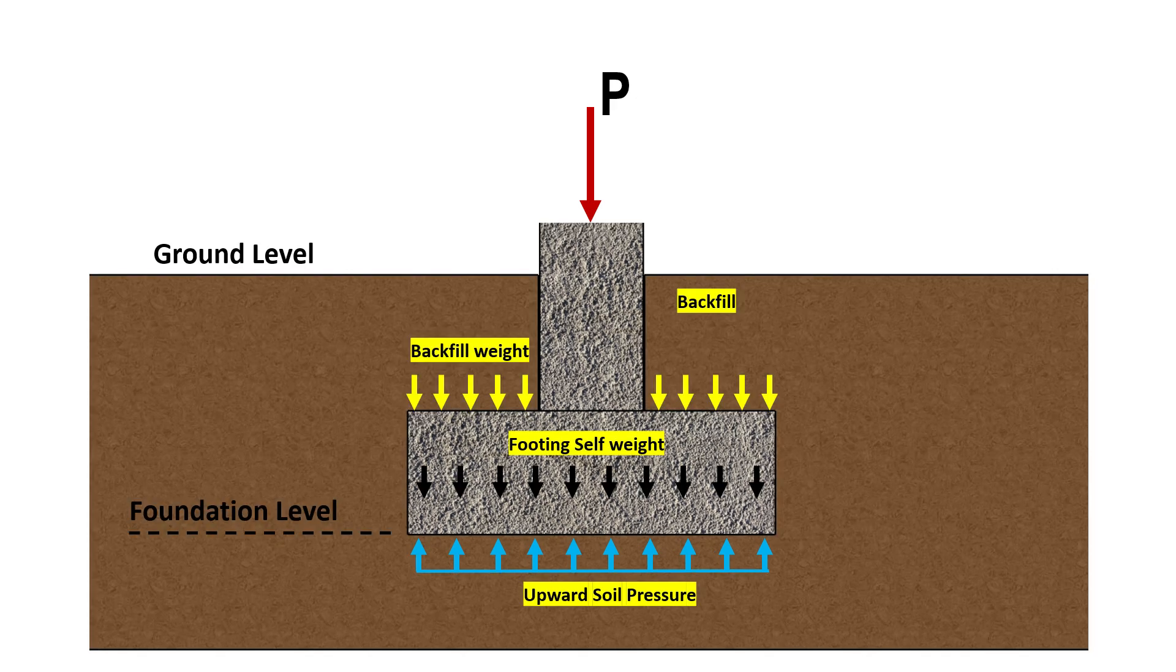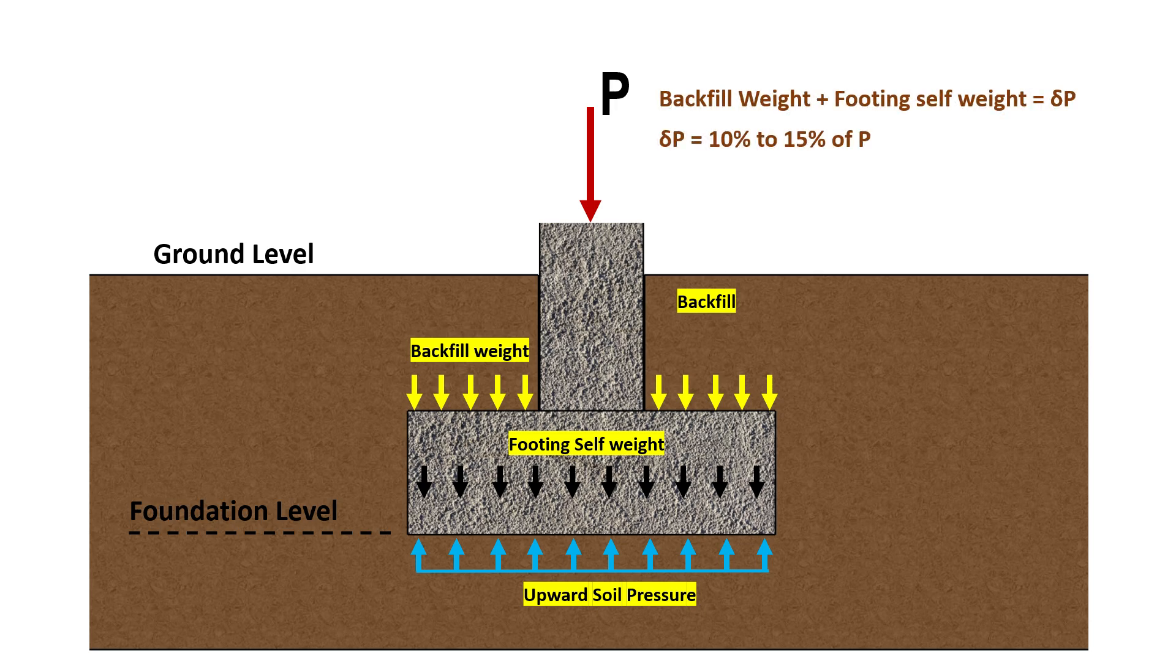Besides the load that's transferred from column, the self-weight of footing and the weight of backfill is also transferred to the soil. For initial calculations, the combined weight of footing and backfill are assumed to be 10 to 15 percent of the column load.